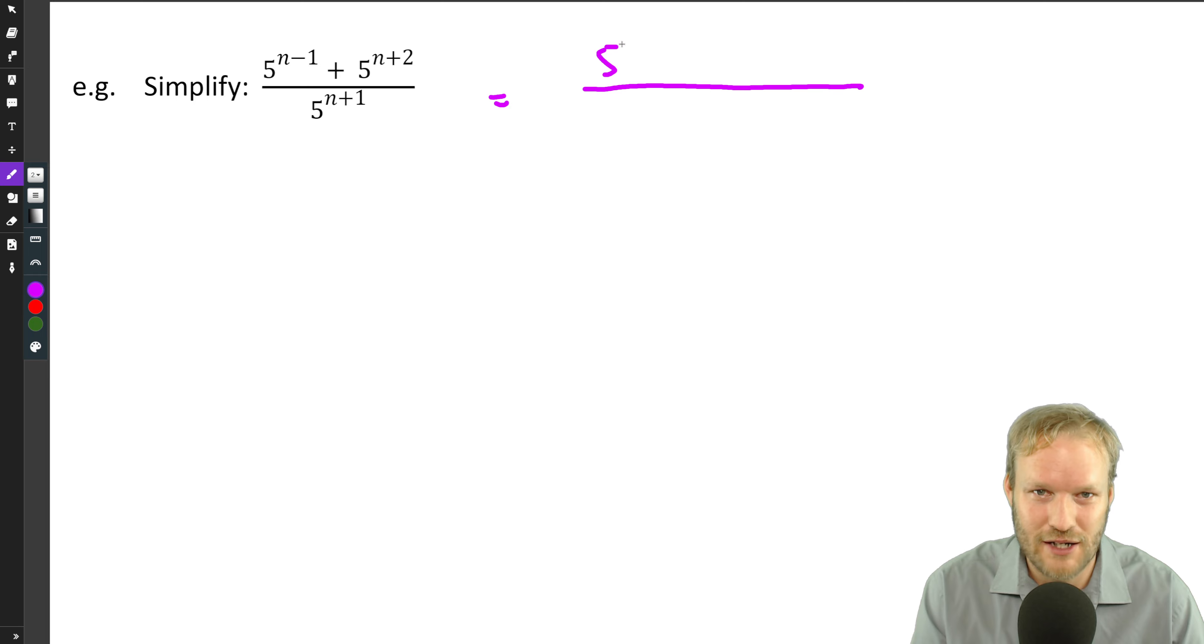So to help us factorize, we can split 5 to the n minus 1 to 5 to the n times 5 to the minus 1. And just think about that going backwards for a second. Here we'd be multiplying 5 to the n times 5 to the minus 1, bases are the same, add exponents, and we would have got back to where we started. But the split will help us in the next step. So plus, let's split that second term, 5 to the n times 5 squared. And let's split our denominator while we're at it.